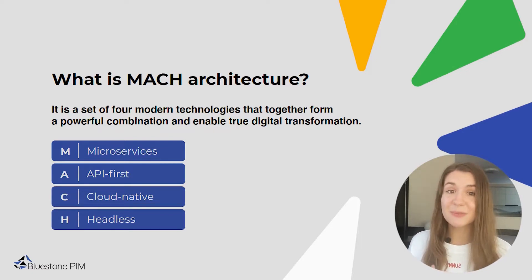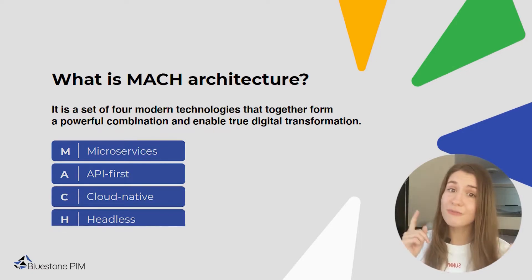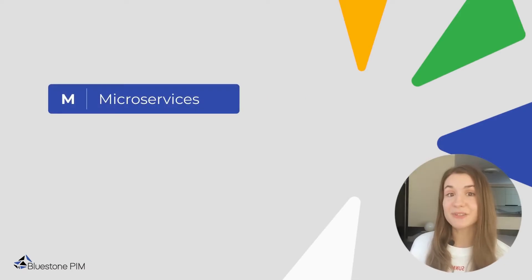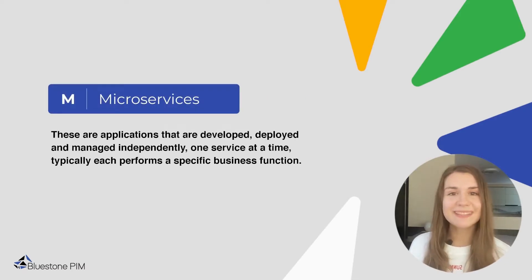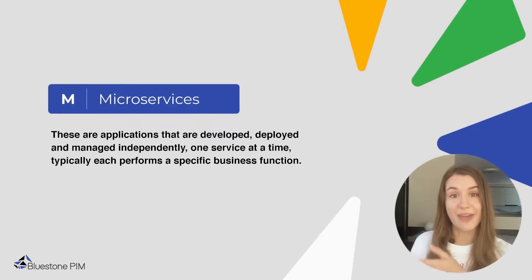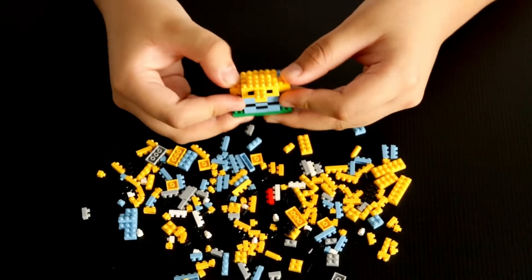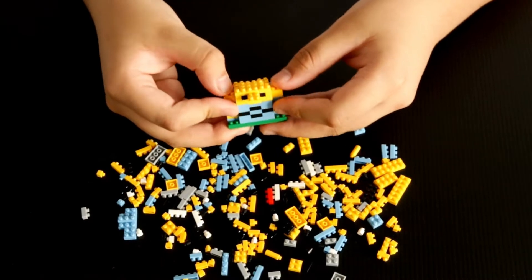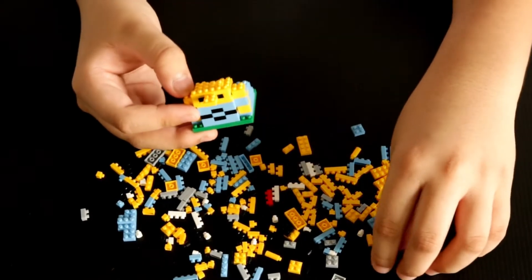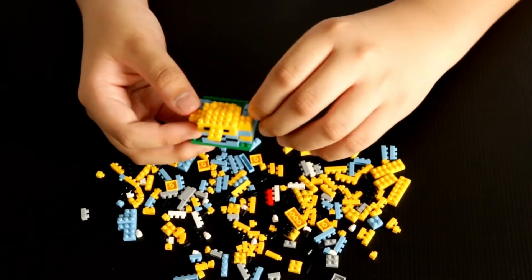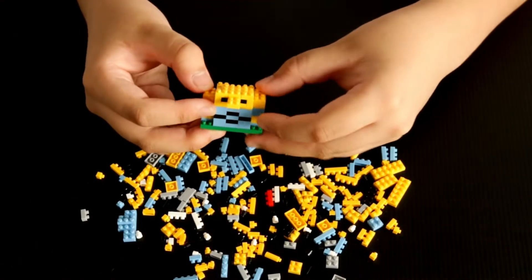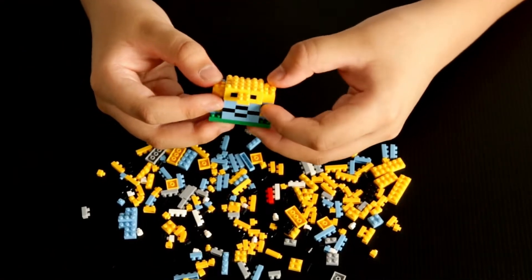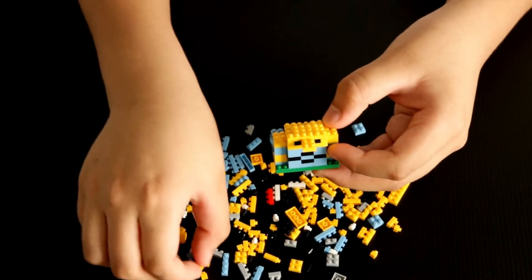Today we are going to go through all four elements of MACH architecture. Microservices are applications that are developed, deployed, and managed independently, one service at a time, and typically each performs a specific business function.